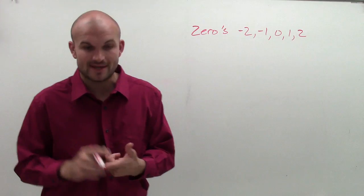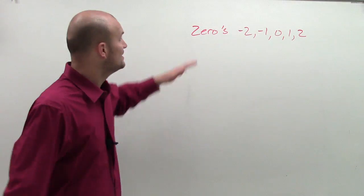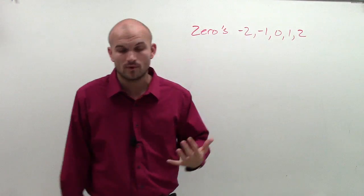Welcome here. So what I want to do is write the polynomial function, given the zeros negative 2, negative 1, 0, 1, and 2.